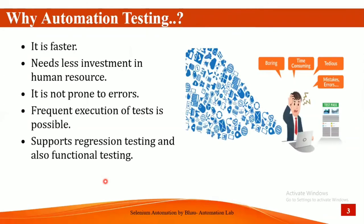Now, why is automation testing required in current companies? Many companies are now using automation tools. Automation is faster — manually writing and executing test cases on different environments takes a lot of time, but automation tools execute much faster, automatically taking test data and running test cases on production or stage environments. It also needs less human resource investment, and one person can execute multiple test cases.